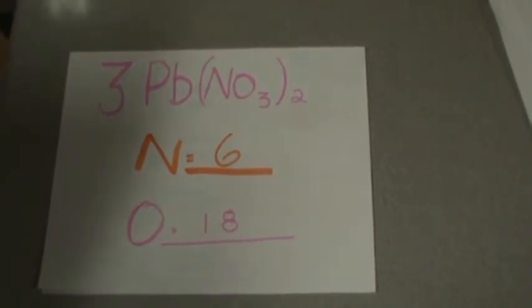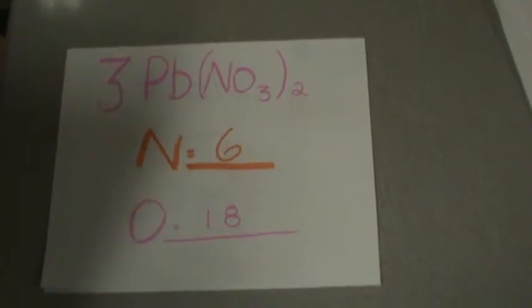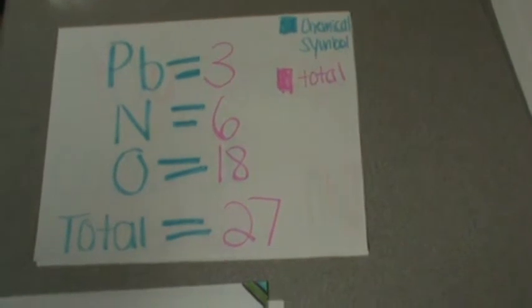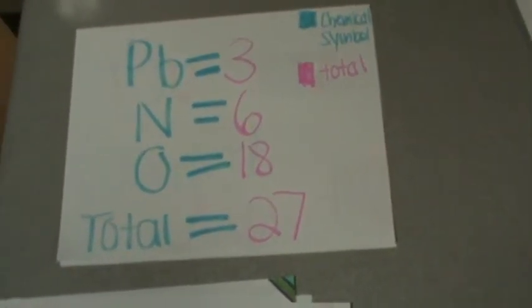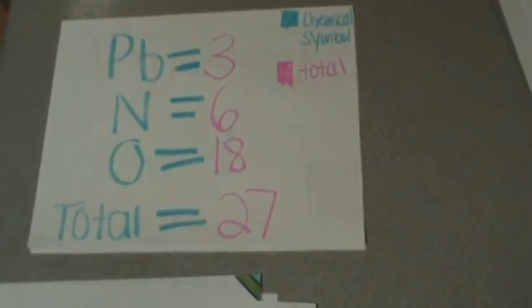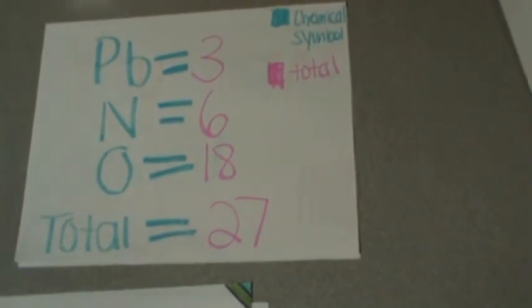Then because there is a 3 in front of the whole formula, you would times it by 3 again. Then you would just add them all up. 3 plus 6 plus 18 equals 27, your total atoms.